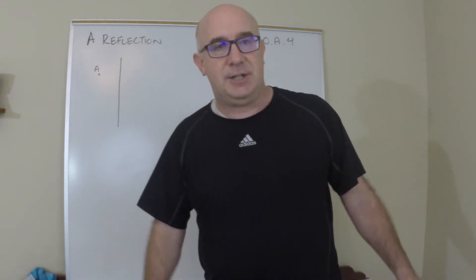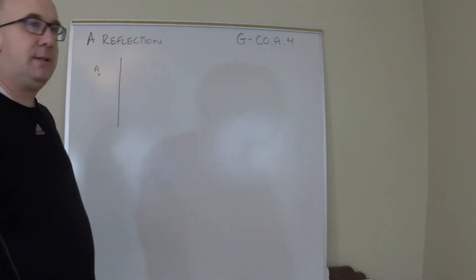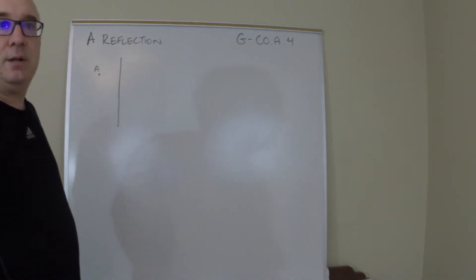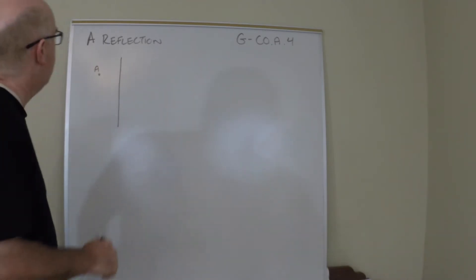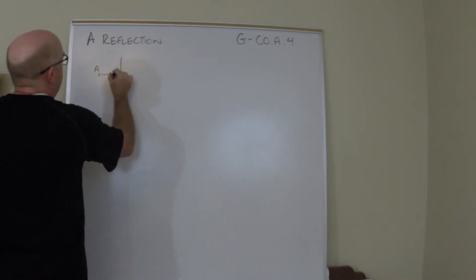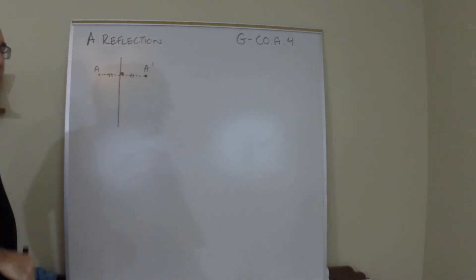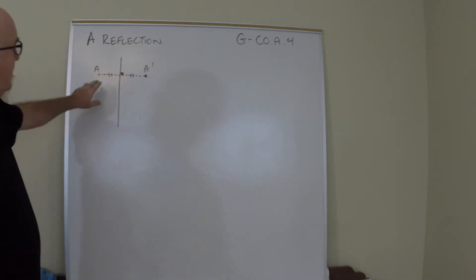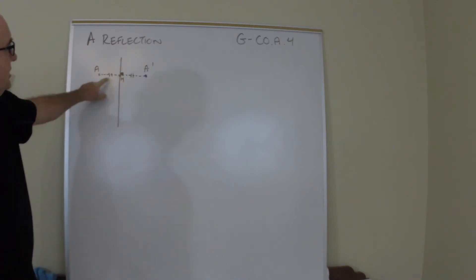A reflection takes all points across the line of reflection in a perpendicular congruent distance. So what that means is if point A is being reflected here, it will go to the opposite side in a perpendicular distance. A would map to A prime and in doing so would create an equal distance to the line and from the line to the new point, and it must be perpendicular.